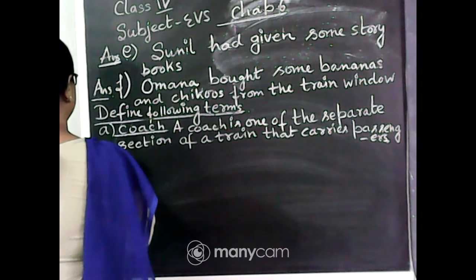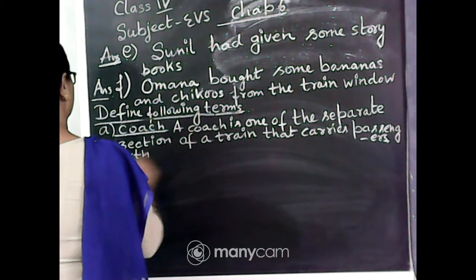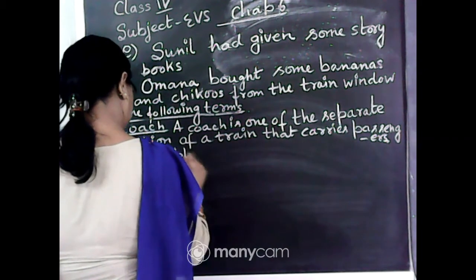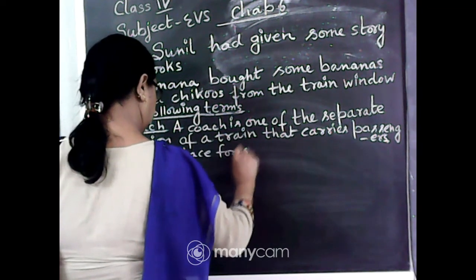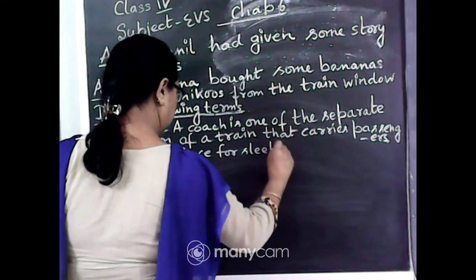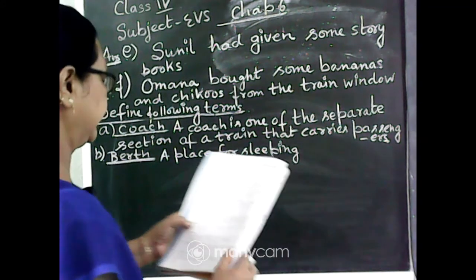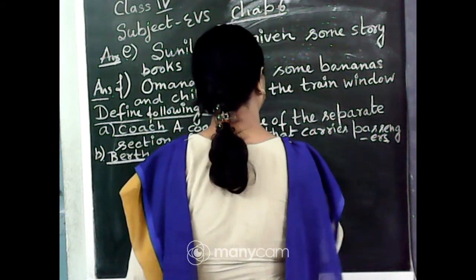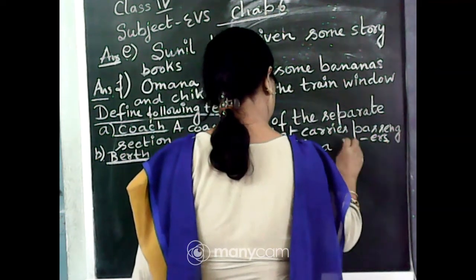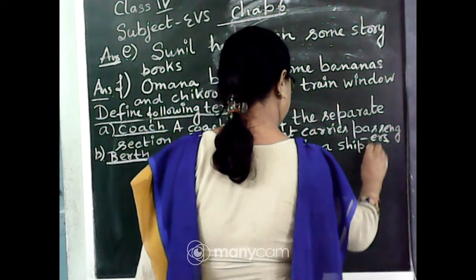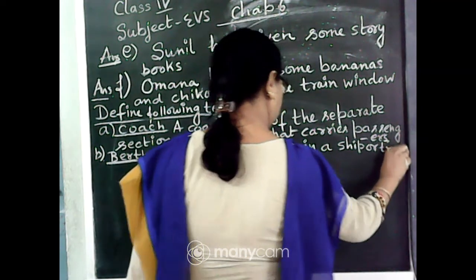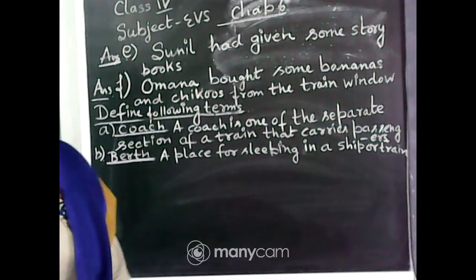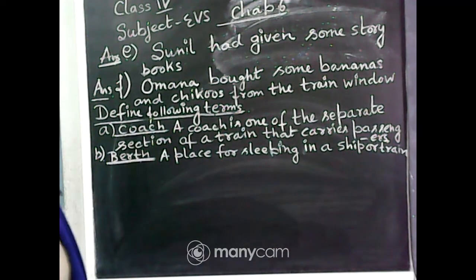B is berth. What is berth? A berth is a place for sleeping on a ship or a train. We have seen it - when you go for a long journey, you sleep in your corresponding berth.